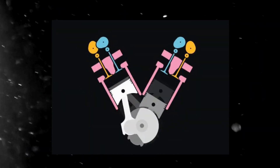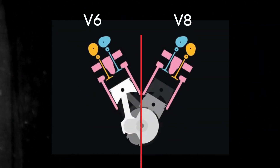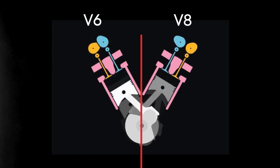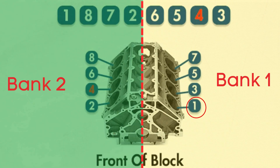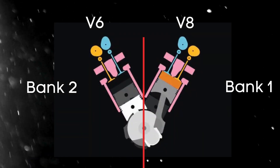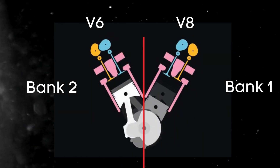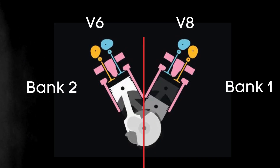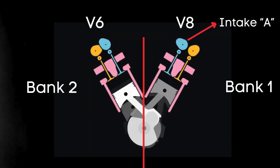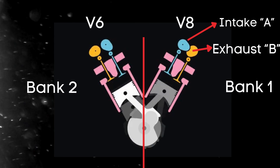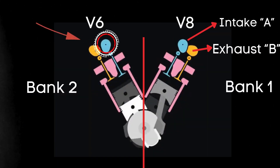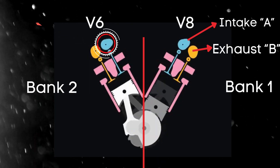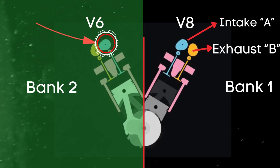In engines with multiple cylinder banks, like V6 or V8 engines, you'll have two sides or banks of cylinders. Bank one typically refers to the side of the engine where cylinder one is located, and bank two is on the opposite side. For engines with dual overhead camshafts (DOHC), each bank has two camshafts — one for intake valves and one for exhaust valves. So when we talk about the bank two intake camshaft, we're referring to the camshaft that controls the intake valves on the opposite side of the engine from where cylinder one is located.